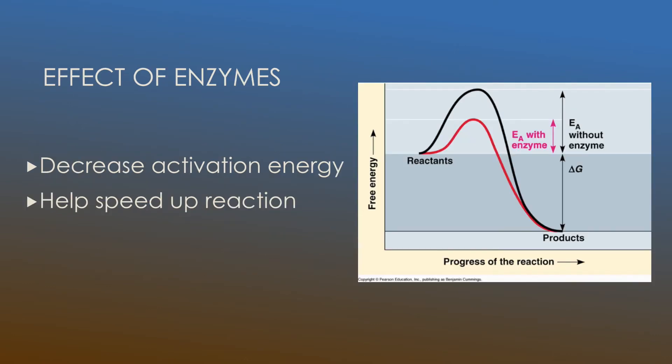So what exactly do enzymes do to the reaction that helps with the activation energy? Essentially what enzymes do is decrease the activation energy. They're able to decrease the range of energy that's required in order to allow for the reaction to become much faster. So if you look to our right on the graph, the green arrow shows what the original activation energy was.